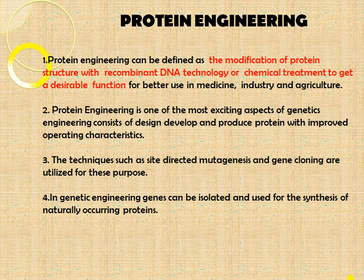One of the most exciting aspects of genetic engineering consists of designing, developing, and producing proteins with improved operating characteristics. Techniques such as site-directed mutagenesis and gene cloning are utilized for this purpose — you can modify protein structure either with recombinant DNA technology or with chemical treatment to produce proteins with improved operating characteristics.